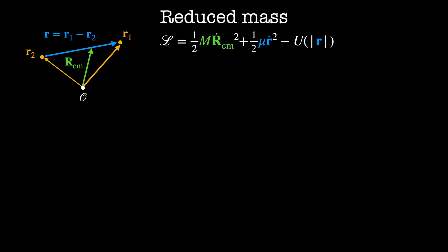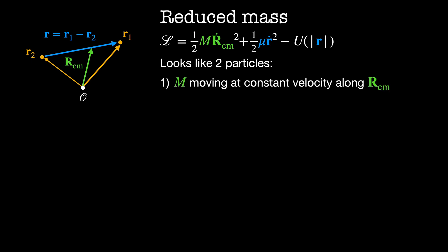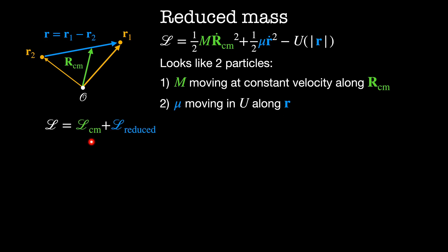In these new coordinates, the Lagrangian is much simpler. It's given by one-half the total mass times rcm-dot squared plus one-half the reduced mass times r-dot squared minus the potential energy, which depends only on the magnitude of r. This looks like the Lagrangian for two isolated particles. The first particle has mass M moving at some constant velocity in the rcm direction. The second particle has mass mu moving in some potential U according to the coordinate r. Our Lagrangian is just the Lagrangian for the center of mass plus the reduced Lagrangian.